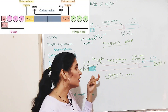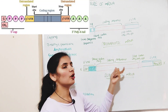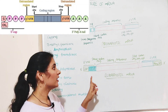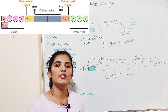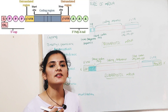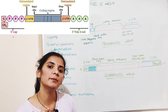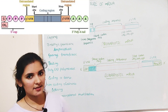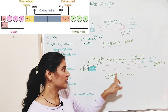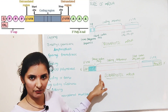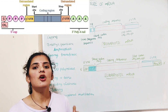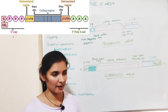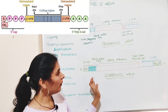Between the start codon and the stop codon, the coding sequence is present. The coding sequence is the sequence of codons that codes for a sequence of polypeptides. It is this region that produces a sequence of polypeptides or a polypeptide chain during translation or protein synthesis. That is why the coding sequence is of great significance — it produces the protein needed by the cell.